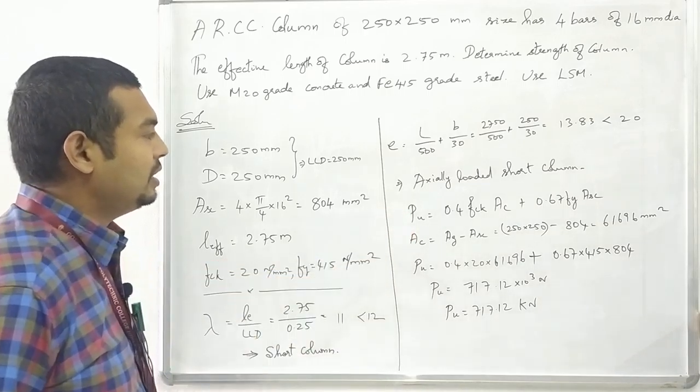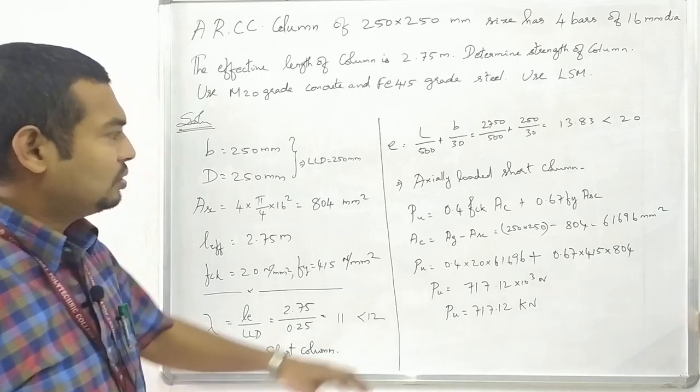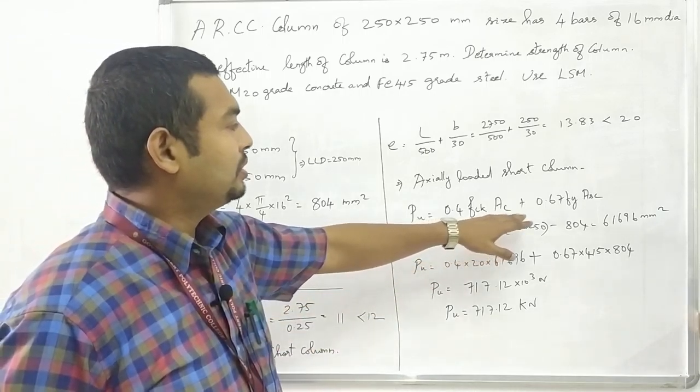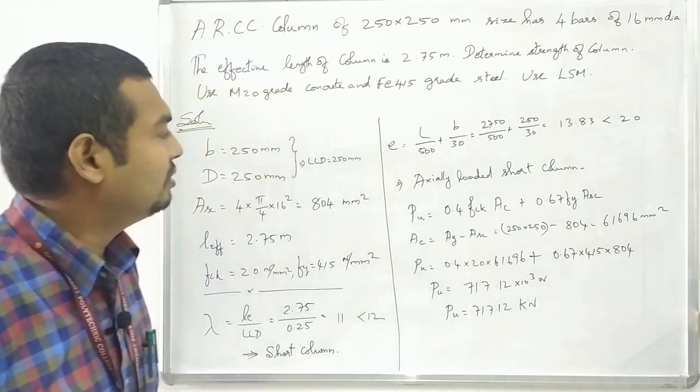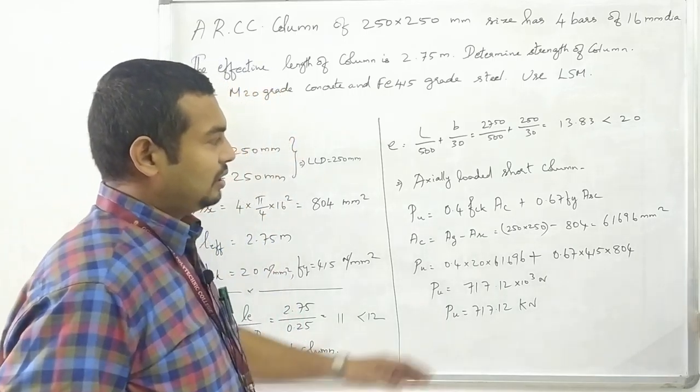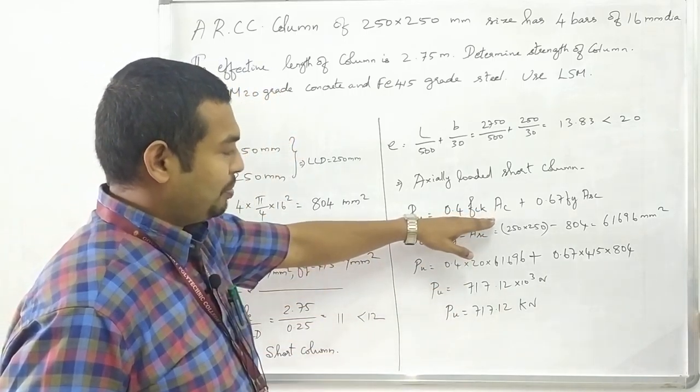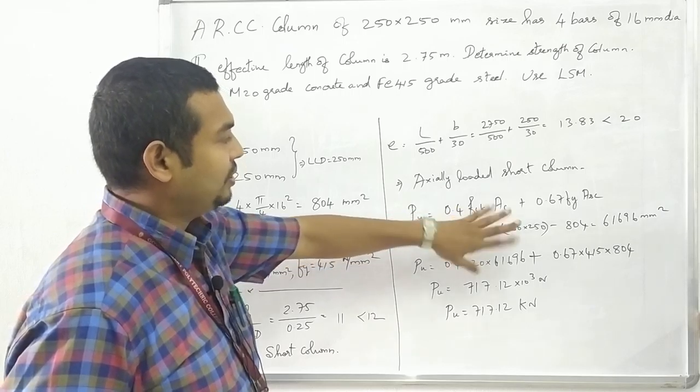So this is an axially loaded short column. The design load Pu equals 0.4 fck Ac plus 0.67 fy Asc, which is the equation for determining strength of column.